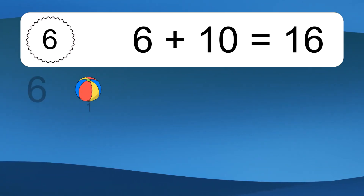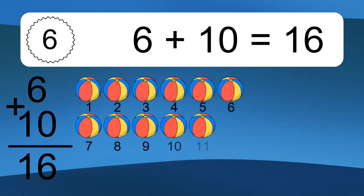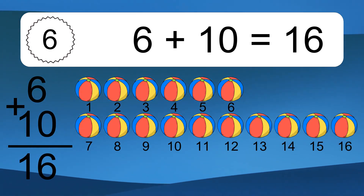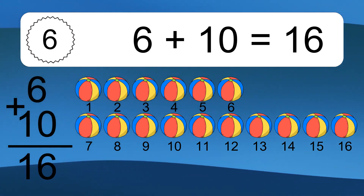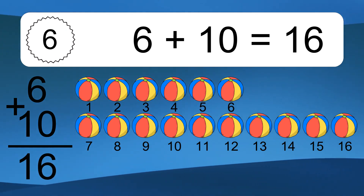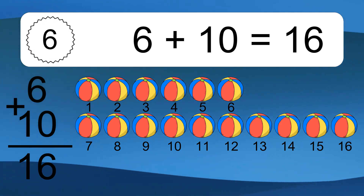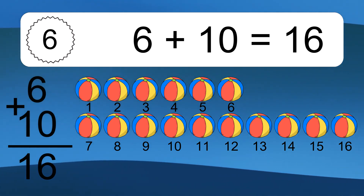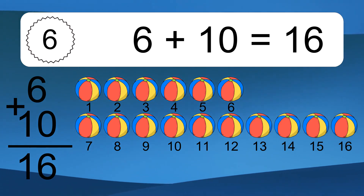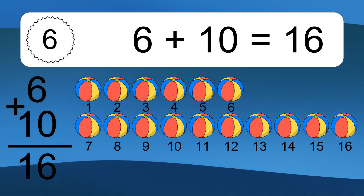6 plus 10 equals what? 6 plus 10 equals 16. Let's count it. 1, 2, 3, 4, 5, 6, 7, 8, 9, 10, 11, 12, 13, 14, 15, 16.